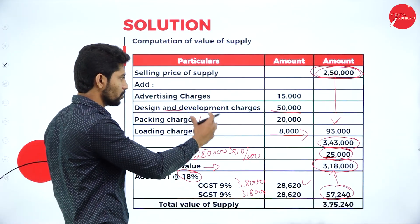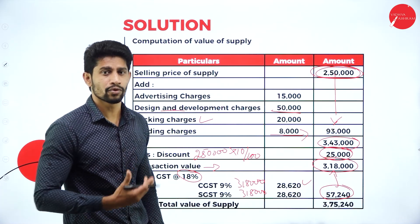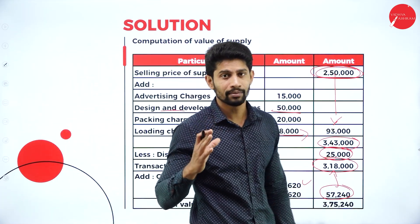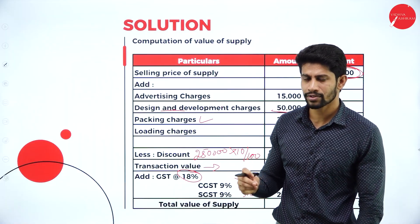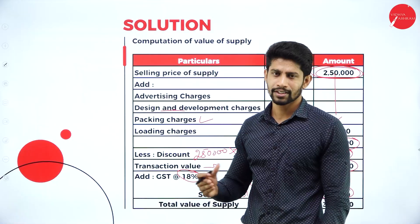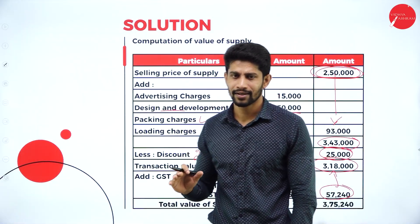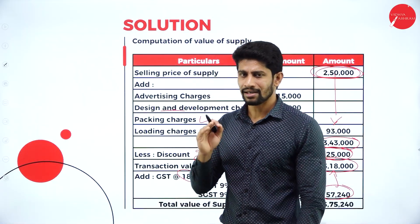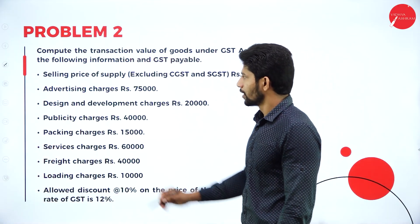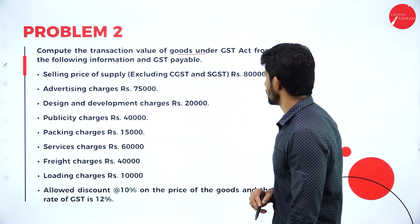This is how you compute the value of supply of goods. This type of question will be asked in the main exam for 15 marks — simply add all expenses to the selling price, less discount, and add GST, and you'll get your 15 marks. Let us solve one more problem: compute the transaction value of goods under the GST Act from the following information, including GST payable.